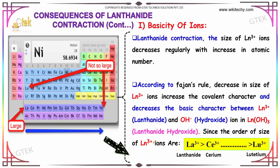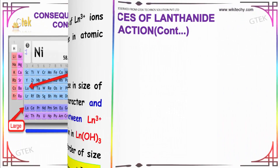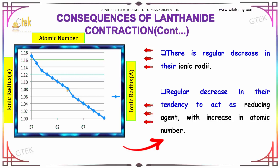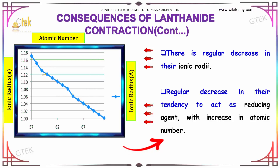Since the order of size of Ln3+ ions is: La3+ is greater than Ce3+, continuing down to lutetium, there is a regular decrease in the atomic radii, as you can see. There is also a regular decrease in the tendency to act as a reducing agent with increase in atomic number.